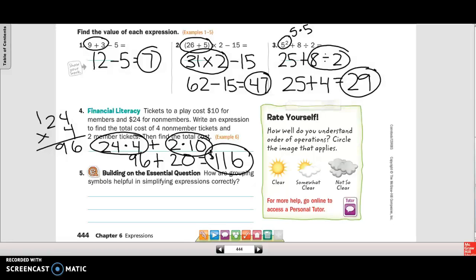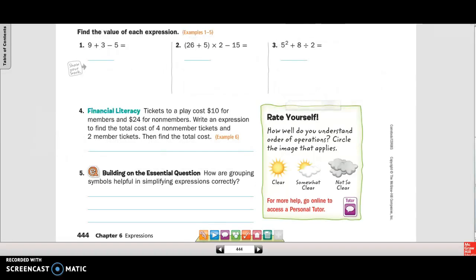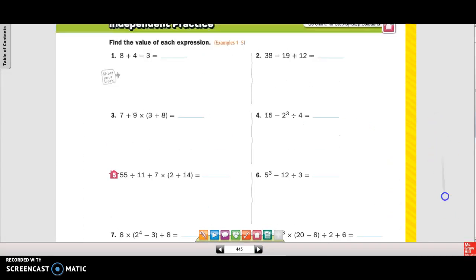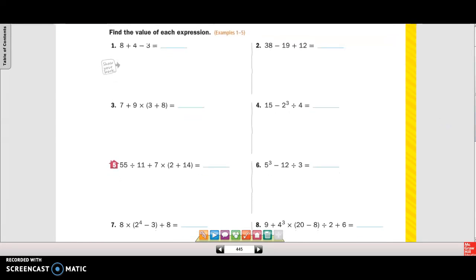Okay, we're going to move on to page 445. So I'll flip over there. It's going to take me just a second to get there. I'm going to do some of these. We're going to start out with an easy one. Since it's addition and subtraction, we're going to go left to right. So we have 8 plus 4. So that's 12 minus 3 equals 9.